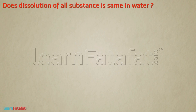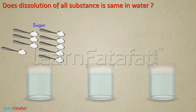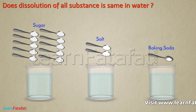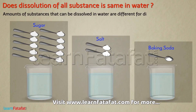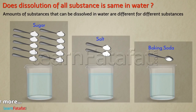Let's now talk about the second question: does water allow dissolution of all substances in the same amount? Try dissolving different substances in water while counting the number of tablespoons dissolved. You will notice that the solution becomes saturated for different amounts of different substances. That means the amount of substance that can be dissolved in water is different for different substances.